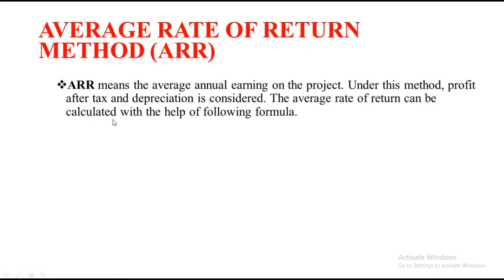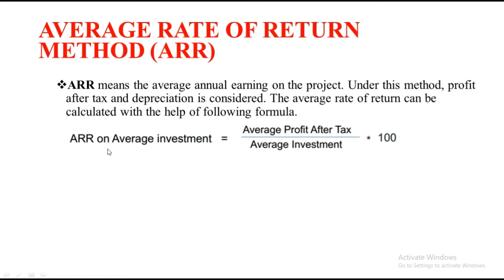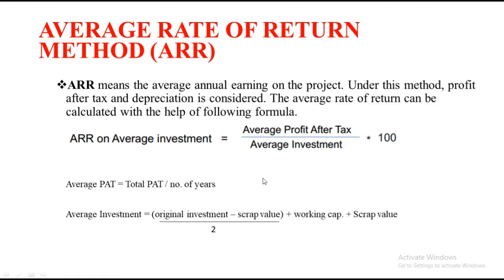The average rate of return can be calculated with the following formula: ARR on average investment equals average profit after tax divided by average investment, multiplied by 100. To get the numerator — average profit after tax — the formula is total profit divided by number of years. To calculate average investment, the formula is: original investment minus scrap value, divided by two, plus working capital, plus scrap value.